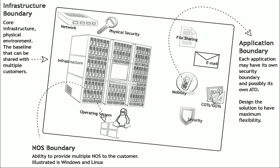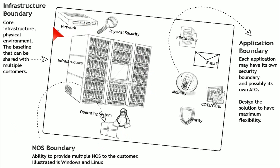That is what we get the ATO on. In review, this drawing shows an infrastructure boundary, a network operating system boundary, and an application boundary. Within these boundaries, we create a repeatable, scalable infrastructure, and then we host customer services within the application boundary. I hope that helps with the understanding, and we'll talk again soon.